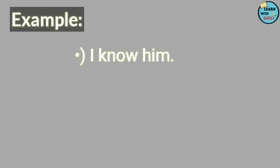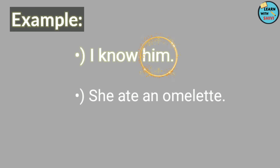For example, let's have a look at the first sentence: 'I know him.' Now in this sentence, what is our verb? 'Know' is our verb. And if we question it — I know who? — then what you get as an answer is 'him'. So 'him' over here becomes our object.